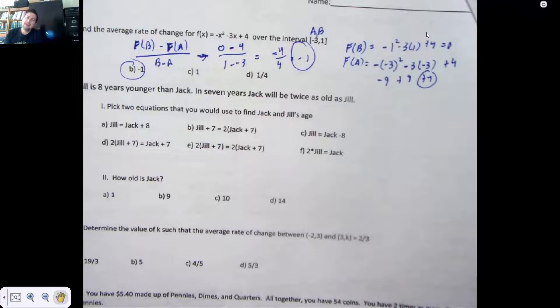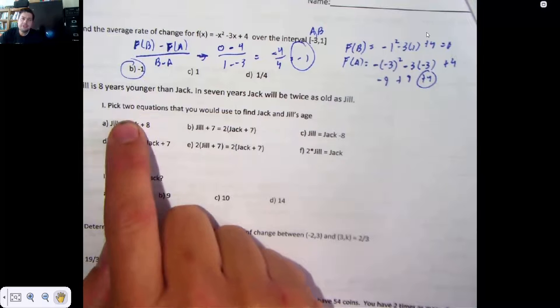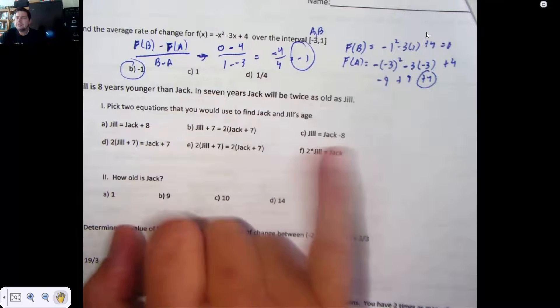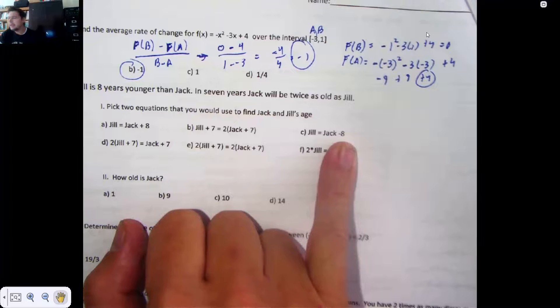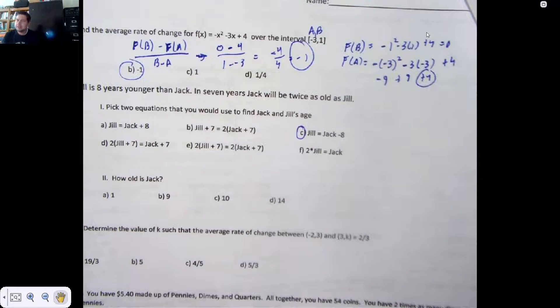Jill is 8 years younger than Jack. This is the one that aggravated me. It aggravated me because almost every single kid who missed this question picked A. What kind of hooked-on phonics reading were you taught? Jill is 8 years younger than Jack. Why would you add 8 years to Jack? Why would you do such a thing? That makes no sense. You would not add 8 years to Jack. You would take away 8 years from Jack. Should have chose C.